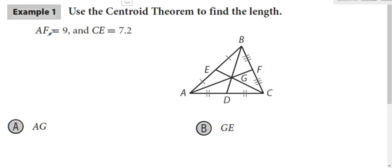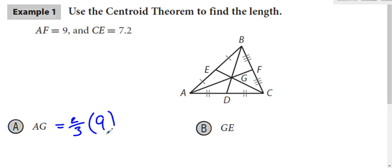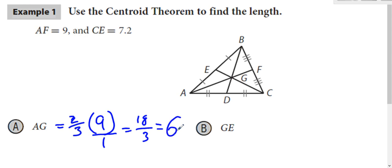Let's use that. AF is nine, so that's the entire length — A to F. Which means A to G, which goes to the centroid, is two-thirds of that length. Two-thirds of nine: you can say it's nine over one, do two times nine over three times one, that's 18 over three, which is six. So AG has a length of six.